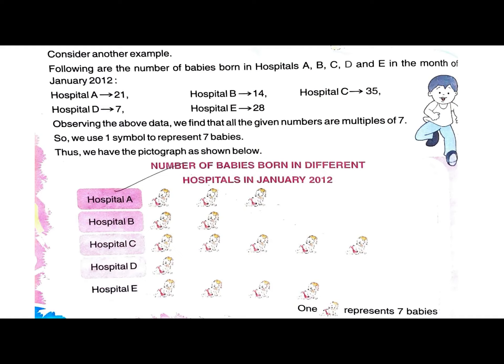First, we need to handle large numbers — it's not possible to draw 35 or 28 individual pictures. In that case, we must find a proper scale where all numbers are divisible by a common divisor. Observing the data, all the given numbers are multiples of 7, so we use one symbol to represent 7 babies. The scale is: one picture of a baby represents 7 babies.